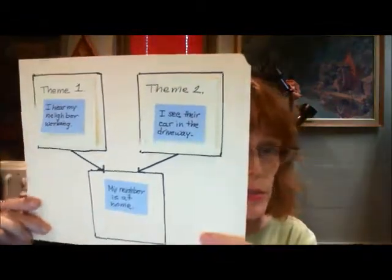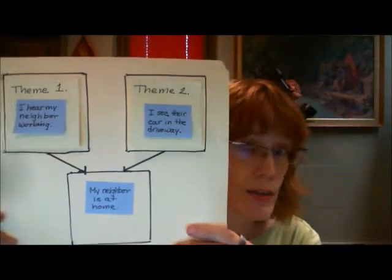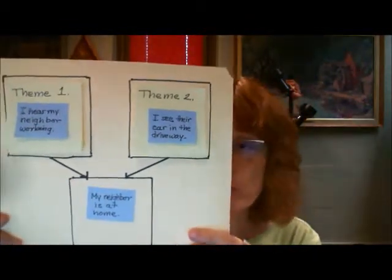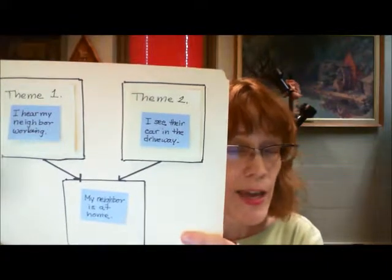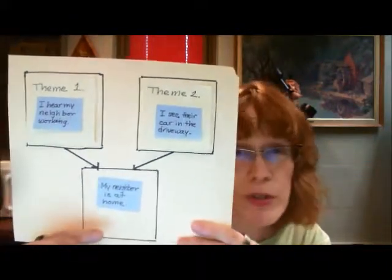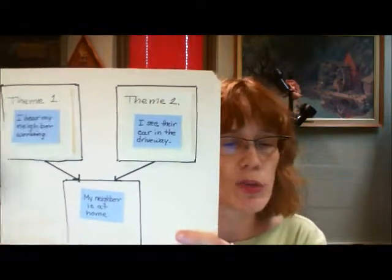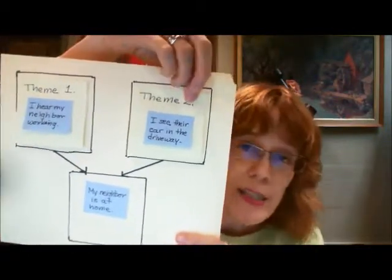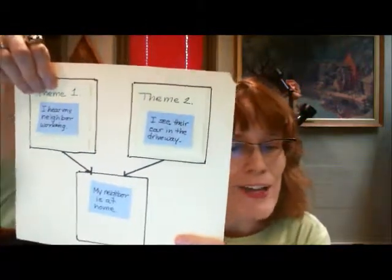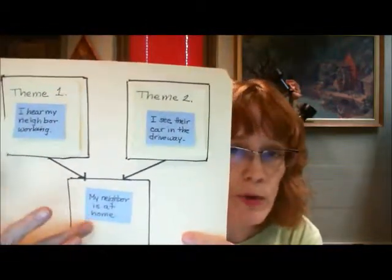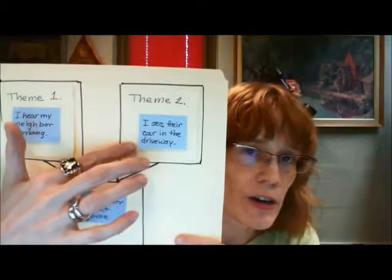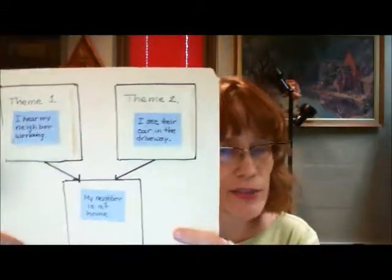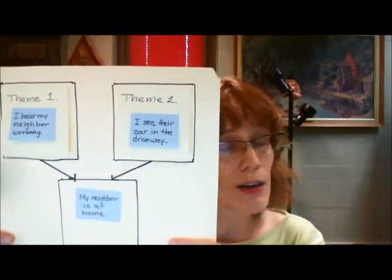How might we express this if we're going to convey it in writing or in speech? Once again, we can use indicator expressions, either reason or conclusion indicator expressions for each of these inferences. We could also put the ultimate conclusion in the middle if we wanted to. We could say, for instance, I hear my neighbor working. Therefore, my neighbor is at home. And besides, I know my neighbor is at home because I can see their car in the driveway. We could do it that way. There's lots of ways. So this is an argument with independent reasons.